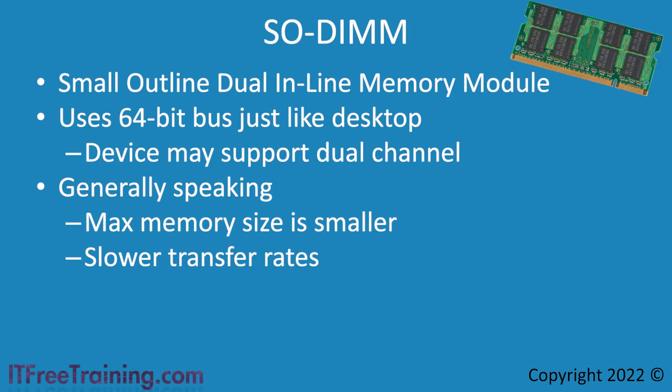DDR memory modules will generally have eight chips on either side for a total of 16, and these all work together. A SODIMM may have a lot less, and fewer chips generally means a slower transfer rate since you don't have as many chips working together.